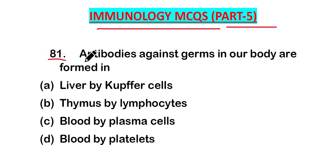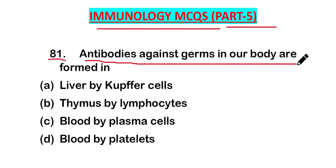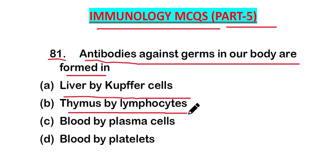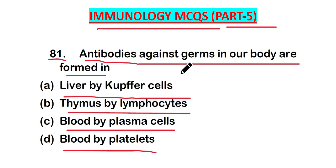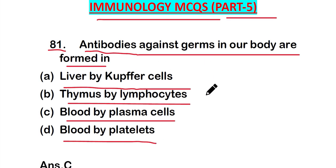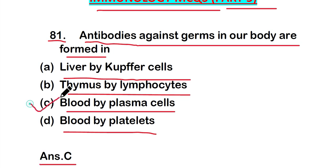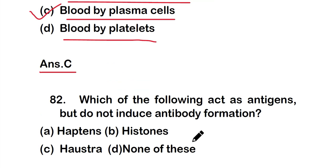Question number 81: Antibodies against germs in our body are formed in — option A: liver by Kupffer cells, option B: thymus by lymphocytes, option C: blood by plasma cells, or option D: blood by platelets. The right answer is option C — blood by plasma cells.